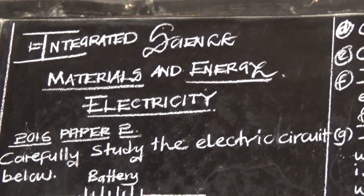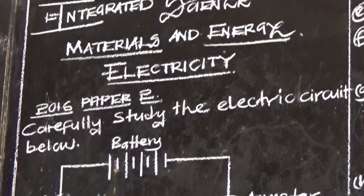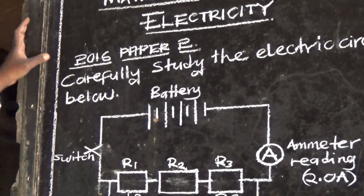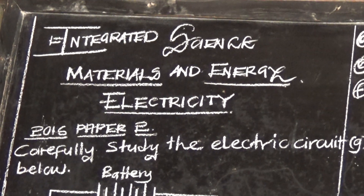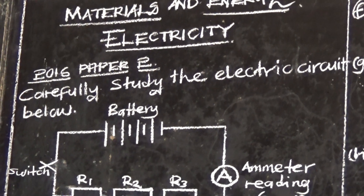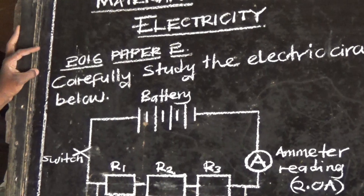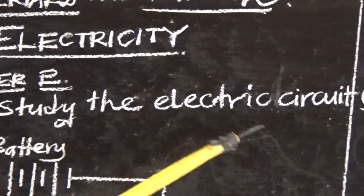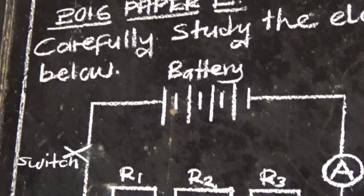Let us look at materials and energy under electricity — a topic under materials and energy which is electricity. We are going to look at the 2016 Paper 2 as the first example. They want us to carefully study the electric circuit diagram below.